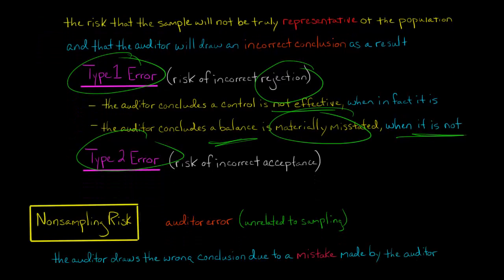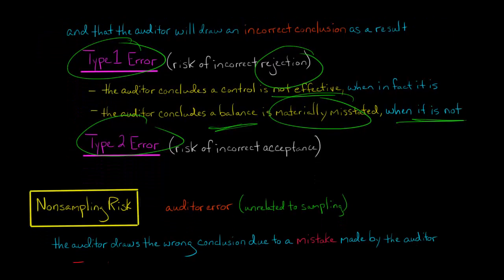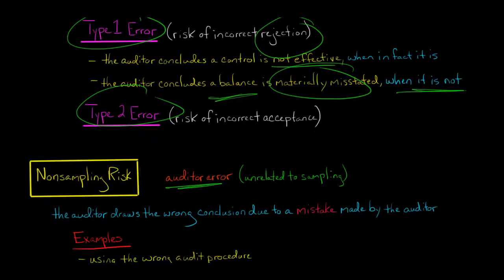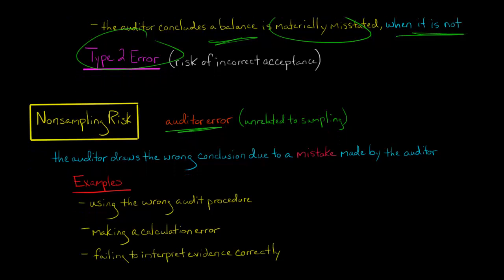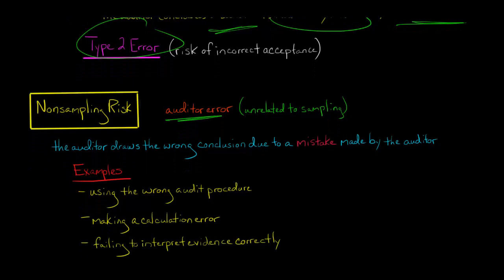Non-sampling risk has nothing to do with the sampling process. It really comes down to the auditor making some kind of mistake. With sampling risk, we're drawing the wrong conclusion because the sample is not representative. With non-sampling risk, you're drawing the wrong conclusion for some other reason.